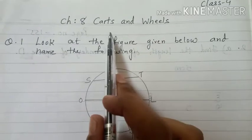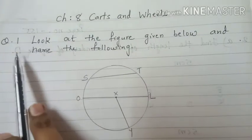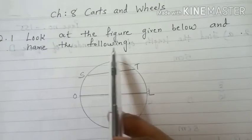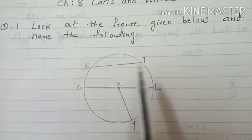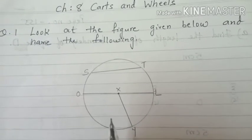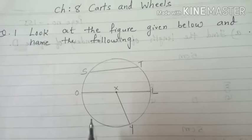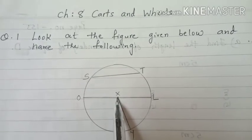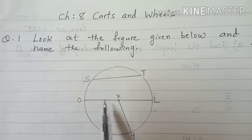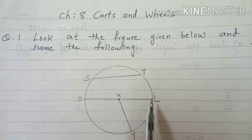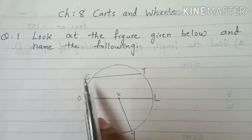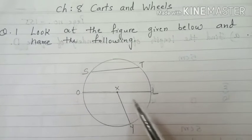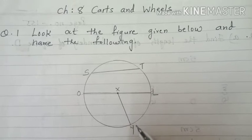Chapter 8, Cards and Wills. Our first question is: look at the figure given below and name the following. Can you see the figure here? This is the circle given with different parts. This is called the center. This line which passes from the center is called the diameter. And this is called the chord. And this line is called the radius.